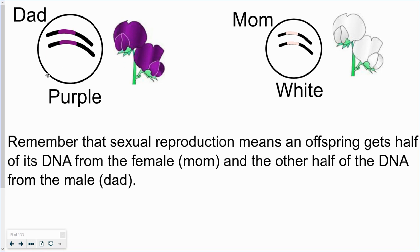Well, remember that dad is going to have his DNA, and since he's true breeding, there's going to be both purple alleles. Mom was true breeding for white, so there are white alleles. Remember that in sexual reproduction, half of this DNA is going to be passed on to the offspring from the dad, and half is going to be passed on from the mom. Alright, see you in the next video.